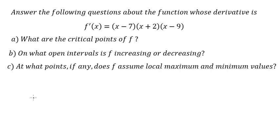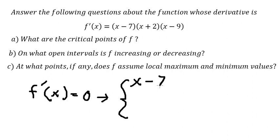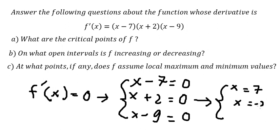That means the derivative equals zero, so we have (s minus 7) equals zero, (s plus 2) equals zero, and the last factor as well. We move negative seven to the right side, and we get s equals seven, s equals negative two, and s equals nine.